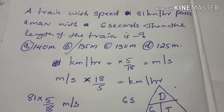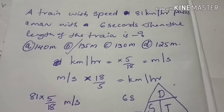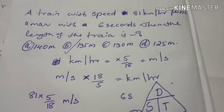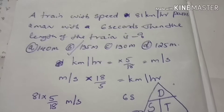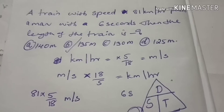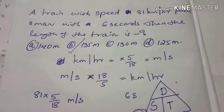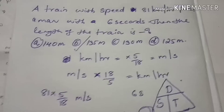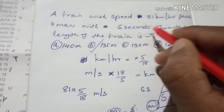A train with speed of 81 kmph passes a man in 6 seconds. We need to find the length of the train. The speed is 81 kmph.